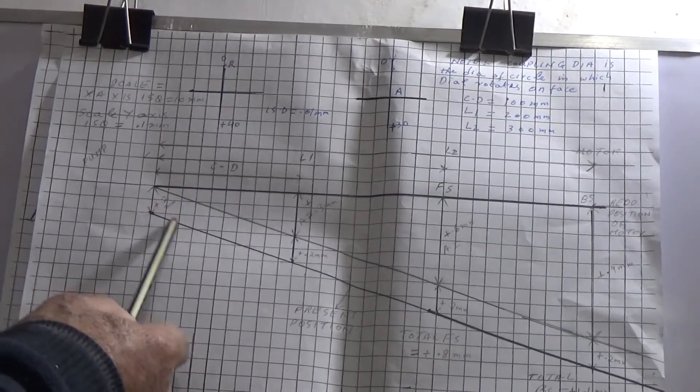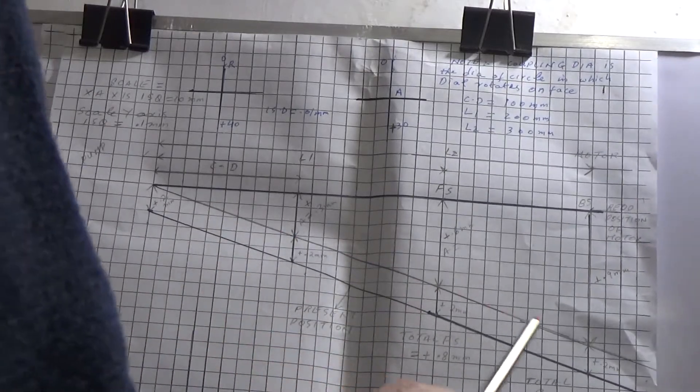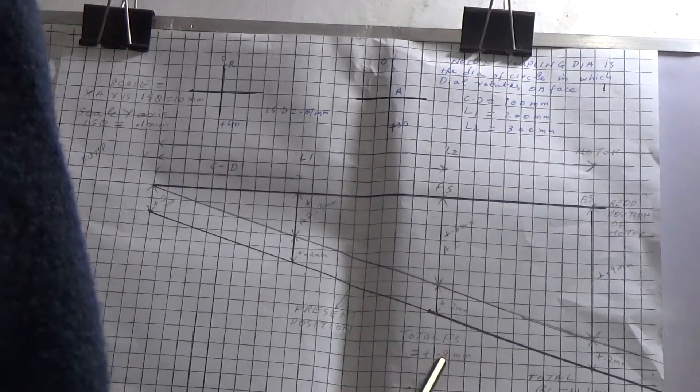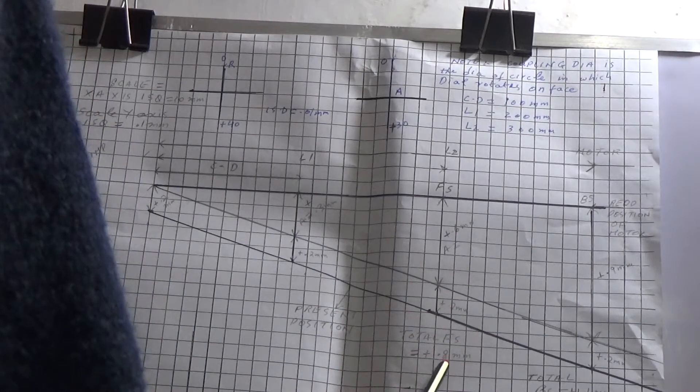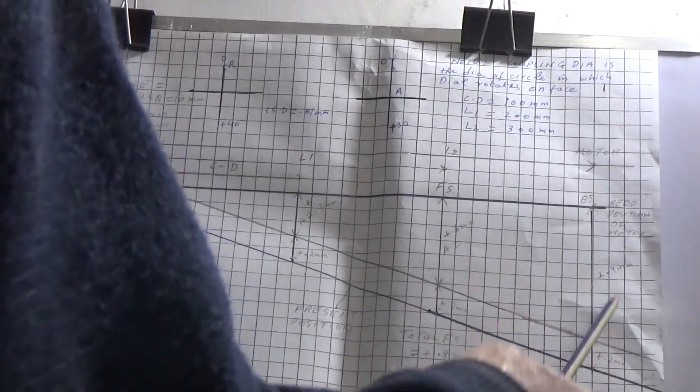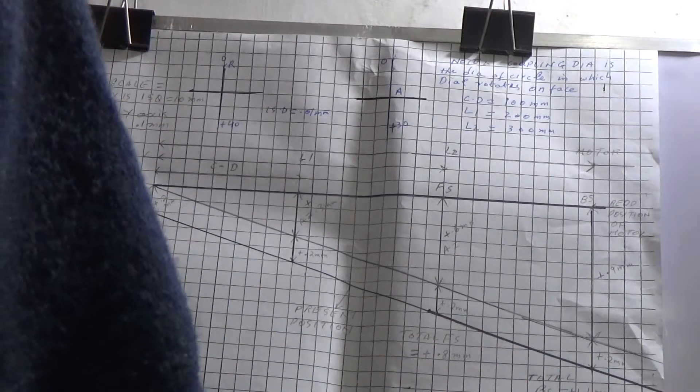So then again you will draw this line parallel to this line. So this will give you the total correction for the front side, which becomes 0.6mm plus 0.2mm, which is 0.8mm. And this gives you the total correction for the back side, which is 0.9mm plus 0.2mm, which is 1.1mm.